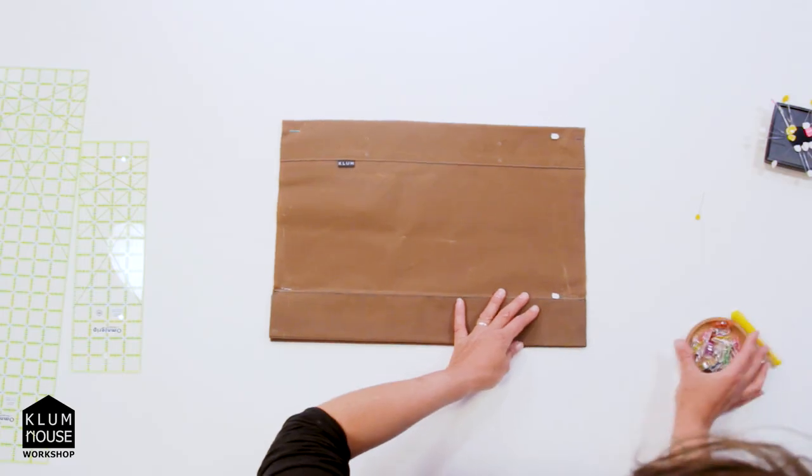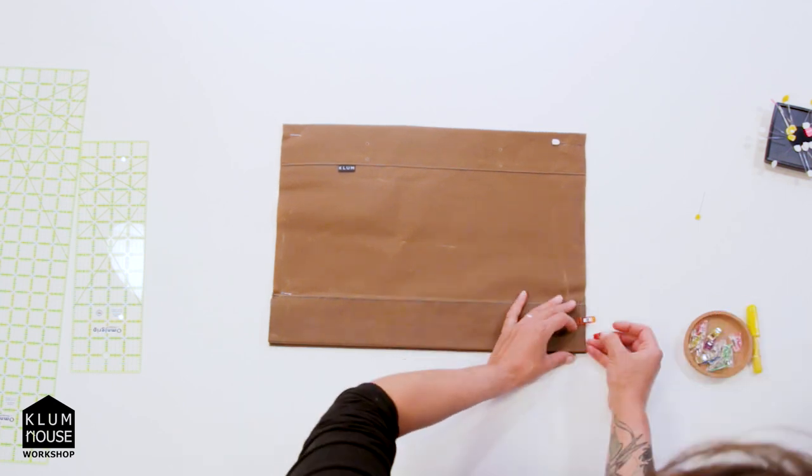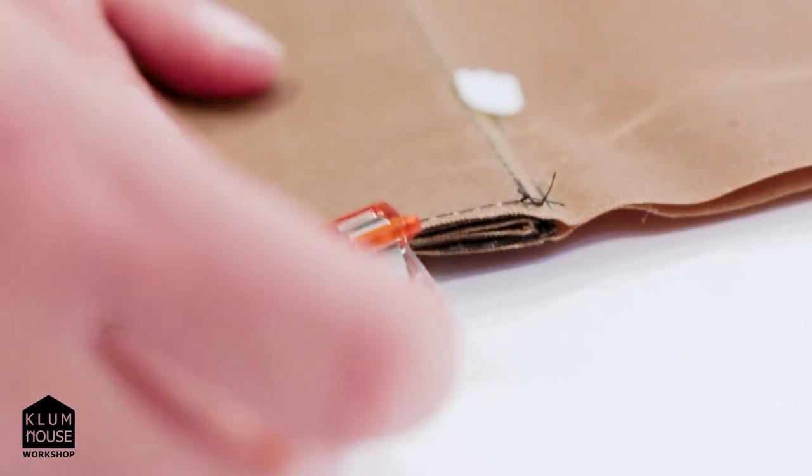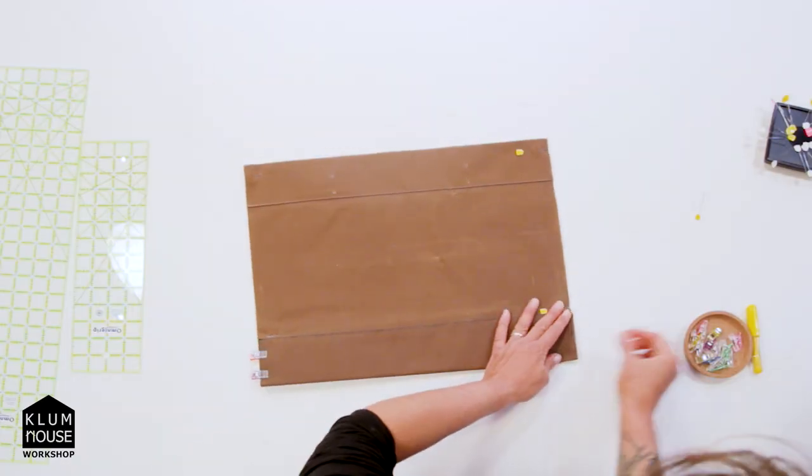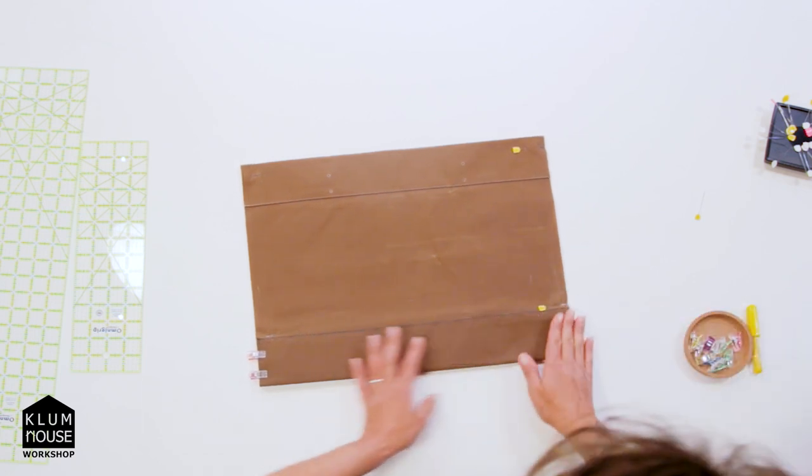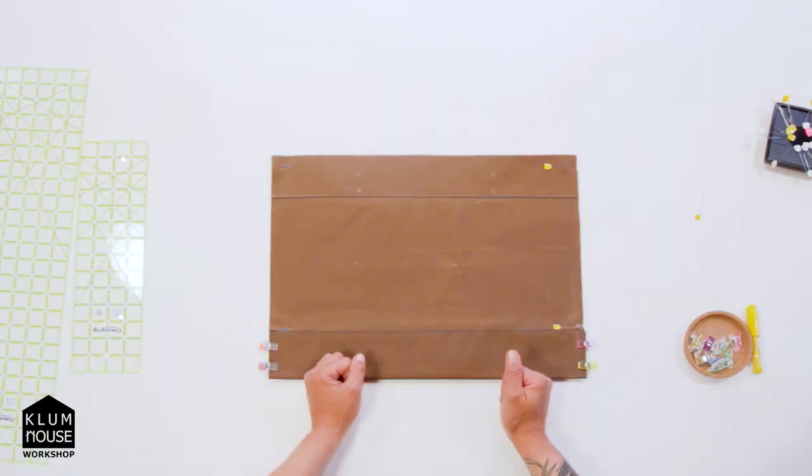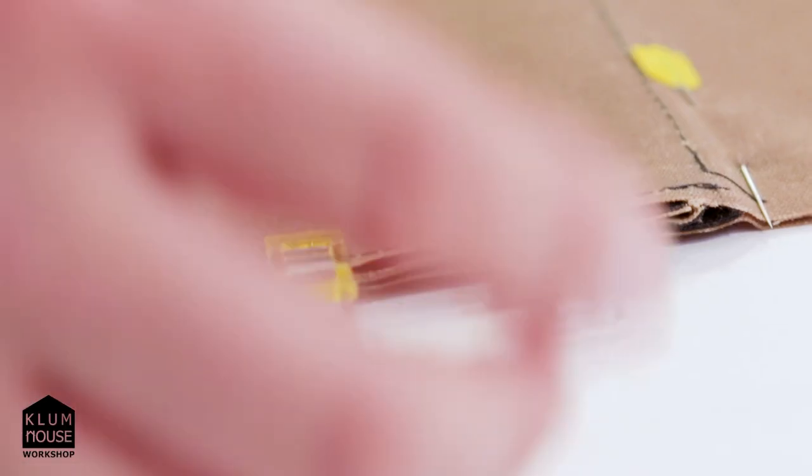Then I'm going to take my craft clips here and I'm going to stick a couple clips in on this side. And then I can flip this over and stick a couple in from this side. Okay. And so now I'm ready to sew my half inch seam allowances for my main side seams.